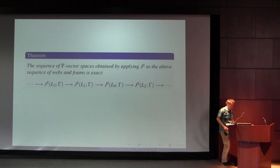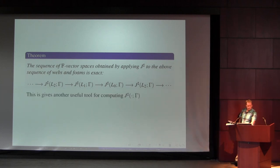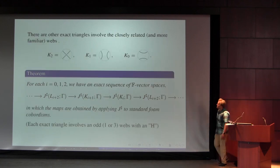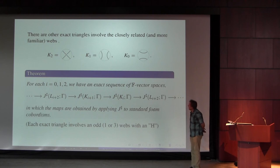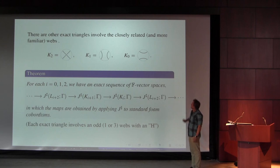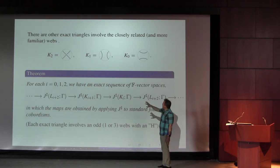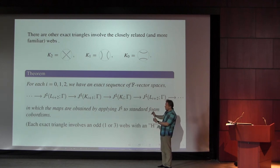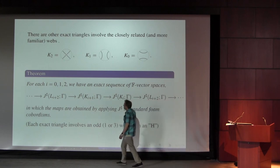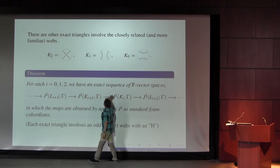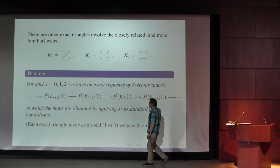The Floer homology groups with these twisted coefficients, just as the ordinary ones do, satisfy an exact long exact sequence. There are some further exact sequences — slightly more familiar — involving these three: just a pair of strands in the three-ball. In this game you either get to use three copies of H in the way that gives L₂, L₁, L₀, or there's also an exact sequence that involves one copy with an H in it and two of these guys. So there's also an exact triangle.